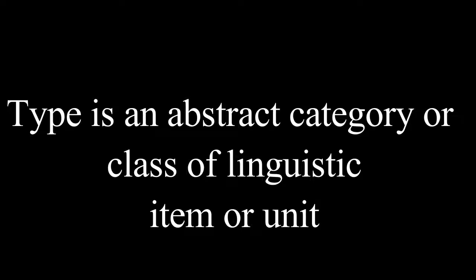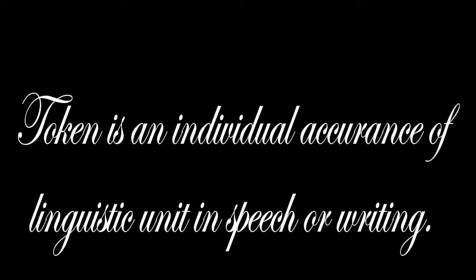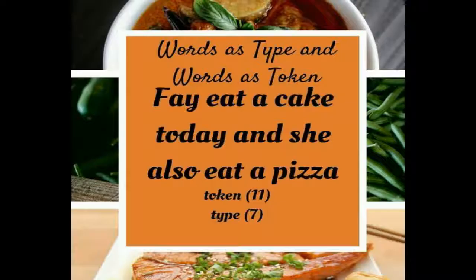Type is an abstract category or class of linguistic item or unit. Token is an individual occurrence of a linguistic unit in speech or writing. For example: 'Faye eat a cake today and she also eat a pizza.' The token count is 11 and the type count is 7.